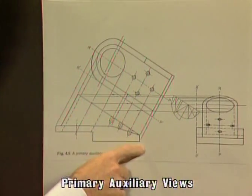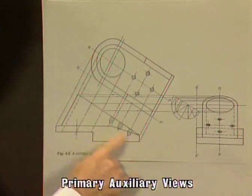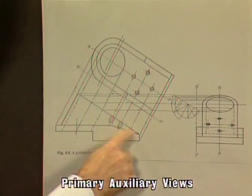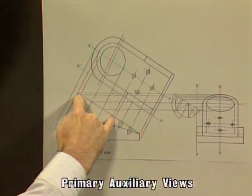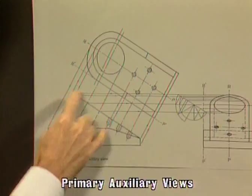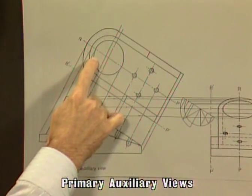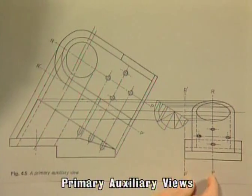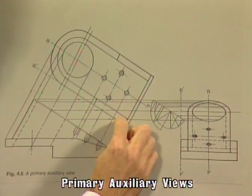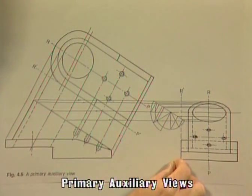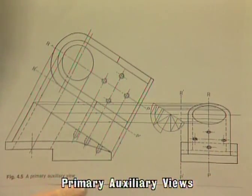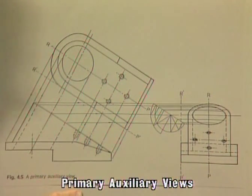The principle of the primary auxiliary view is that we project off from that surface that's at right angles to this view. We project off at 90 degrees all those points, and using dividers, we step off the distances in that direction from equivalent distances in that view. The actual mechanics of it are all included in boundary with figure 4.5.